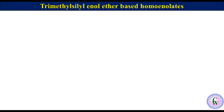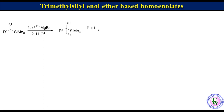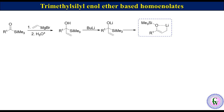Trimethylsilyl enol ether-based homoenolates. Acyl trimethylsilane, when treated with vinyl magnesium bromide, affords the corresponding alpha-trimethylsilyl allyl alcohol. In the presence of butyllithium, the corresponding alkoxide ion is formed, which undergoes Brook rearrangement to produce a chelated homoenolate. It reacts with alkyl iodide to produce a Z-silyl enol ether, which can be silyl-deprotected to produce a ketone, or can react with electrophiles like alkyl halide, aldehyde, ketone, and Michael acceptors to produce a substituted ketone.